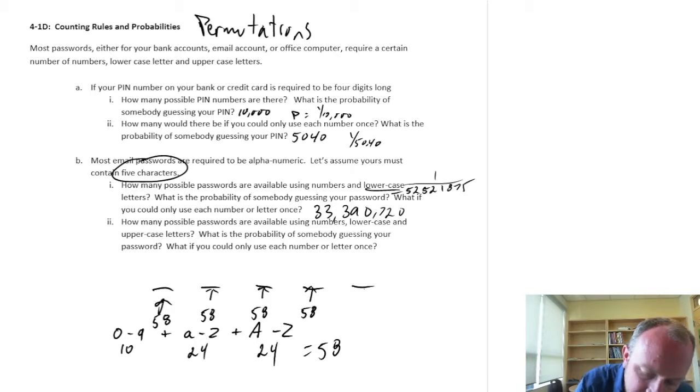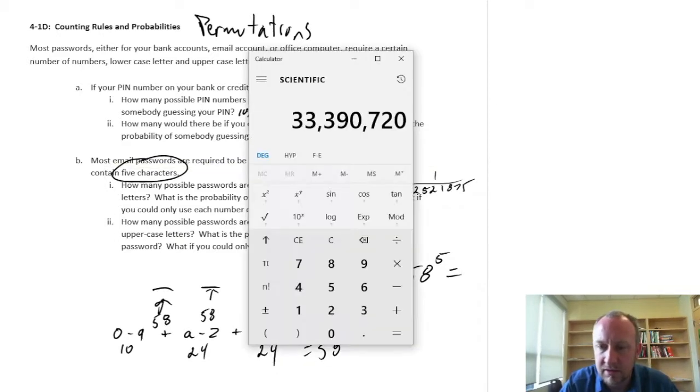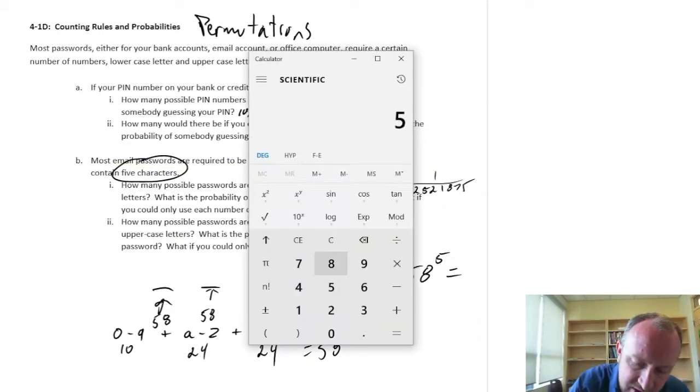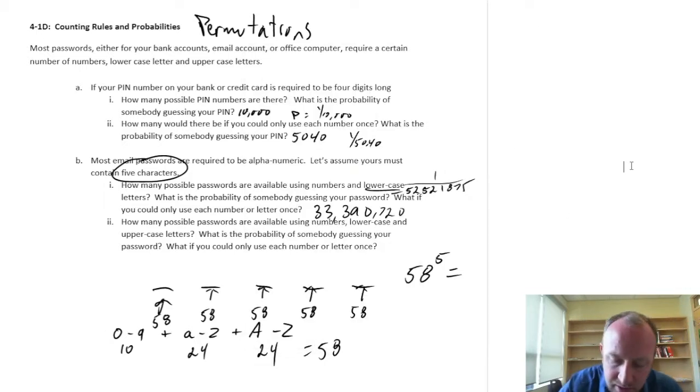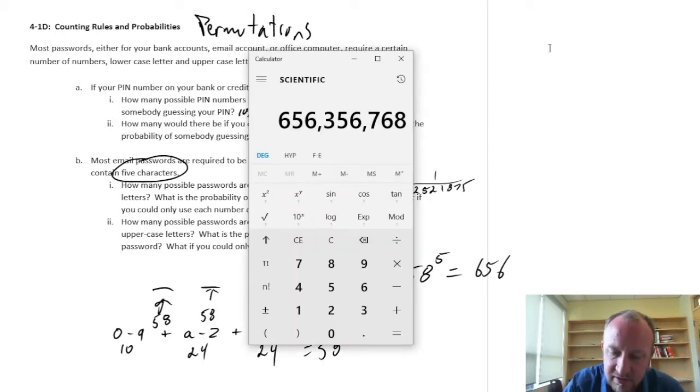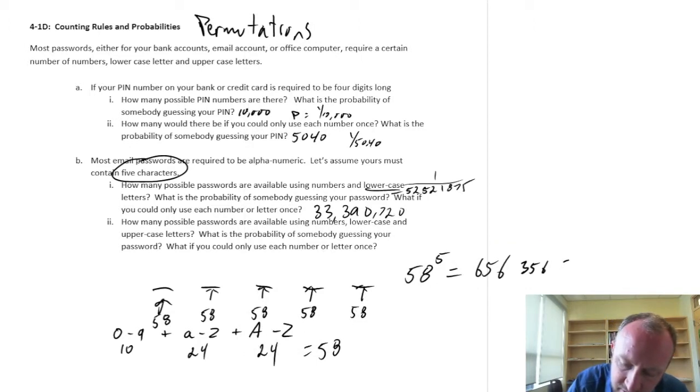And so, our first calculation, now I have 58 possible values, I'm choosing five of them. We're going to get into some large numbers here, 58 to the power of 5, 656 million. 656 million, let's be precise, 356,768. So, probability of somebody guessing that is getting exceedingly, exceedingly small.